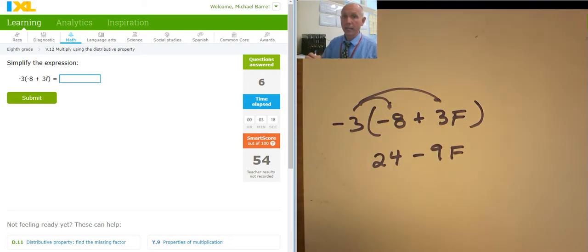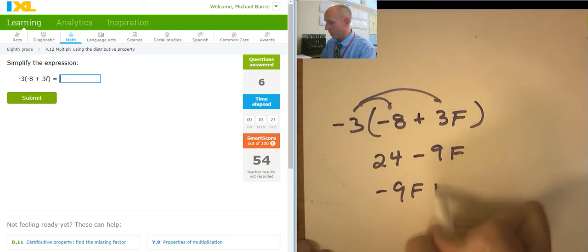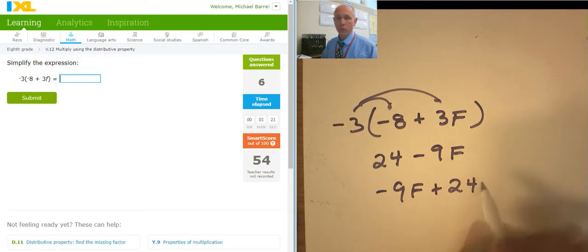So 24 minus 9F, or I could write it as negative 9F plus 24. Either of those would be acceptable.